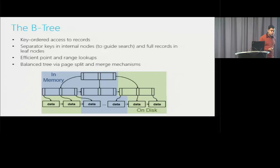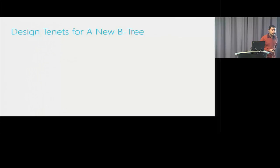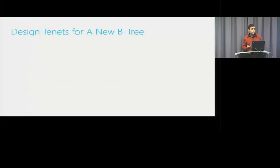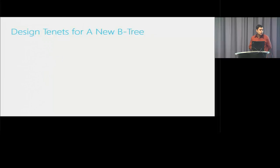One might ask: because the B-tree is 40 years old, why are we revisiting it? What has changed? The answer is that hardware has changed big time over the last 40 years. Many B-tree implementations are optimized for old hardware — single-core CPUs, hard disks, very little main memory. Multiple aspects of this hardware have changed over the last 10 years, and there is an opportunity to optimize for much better performance. That is the thesis of this project.